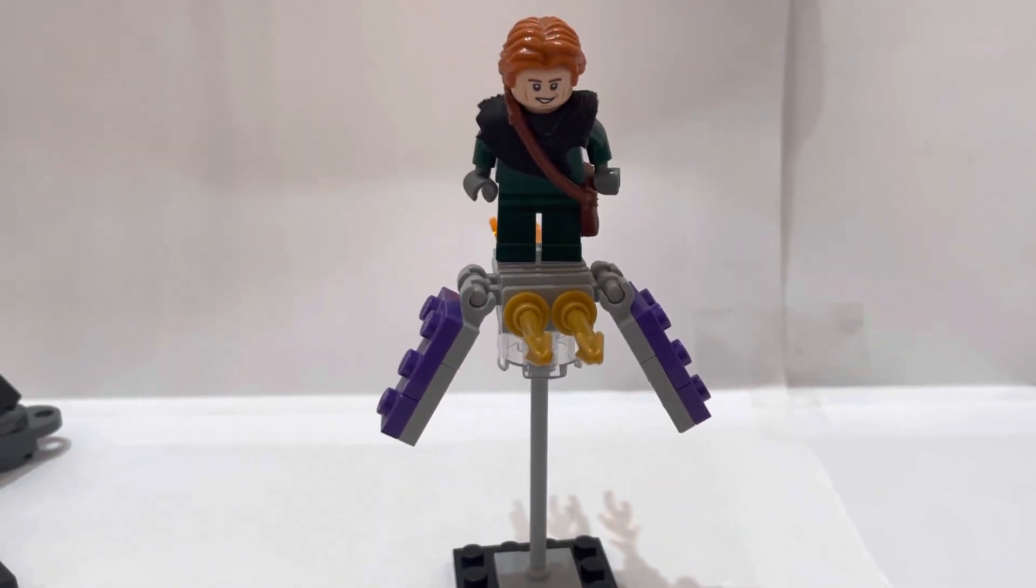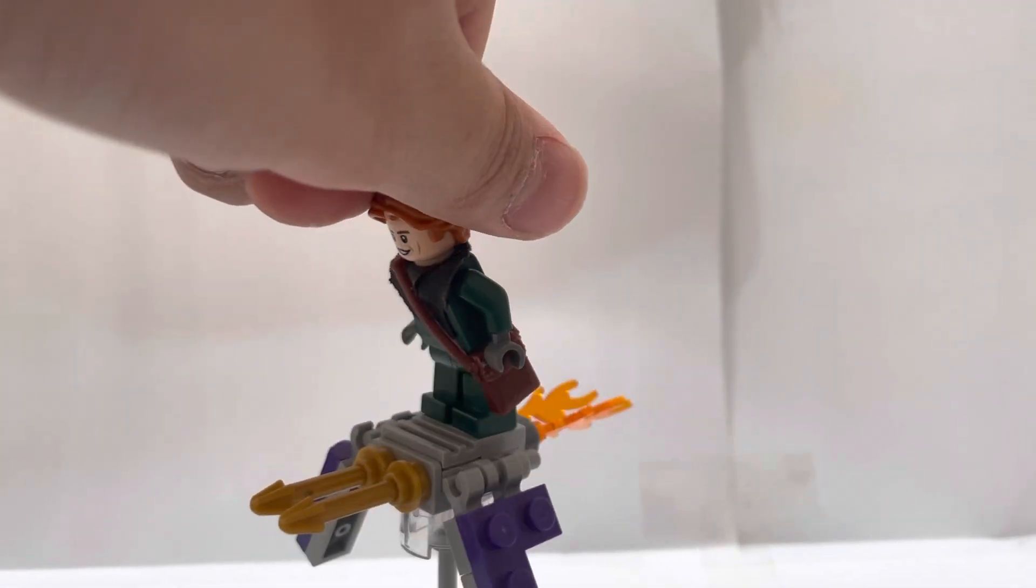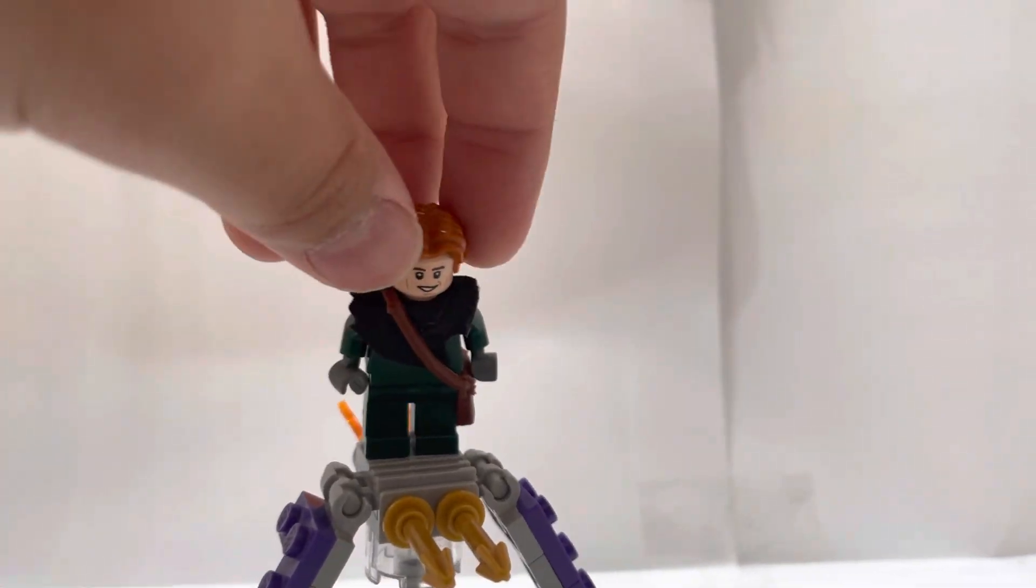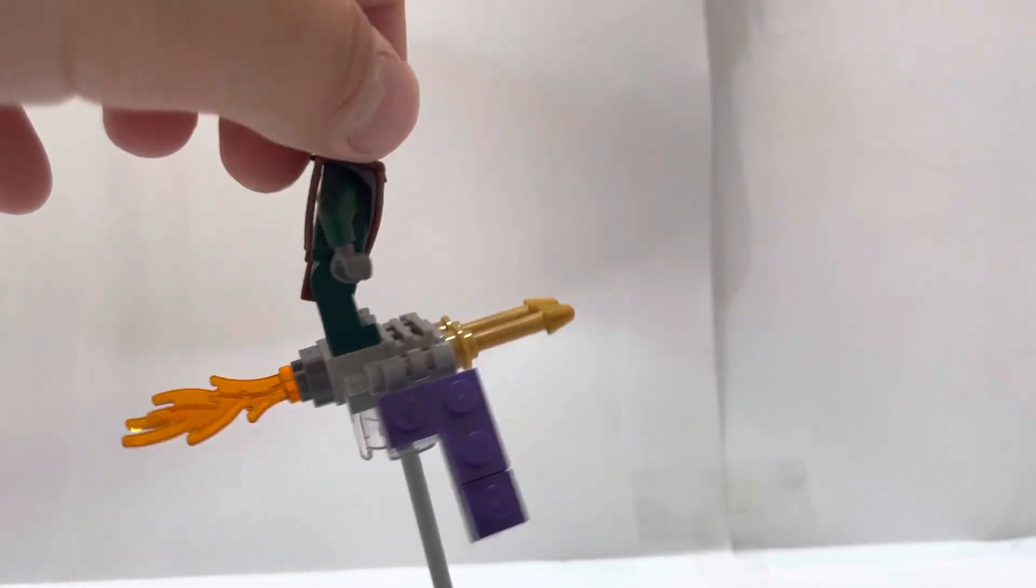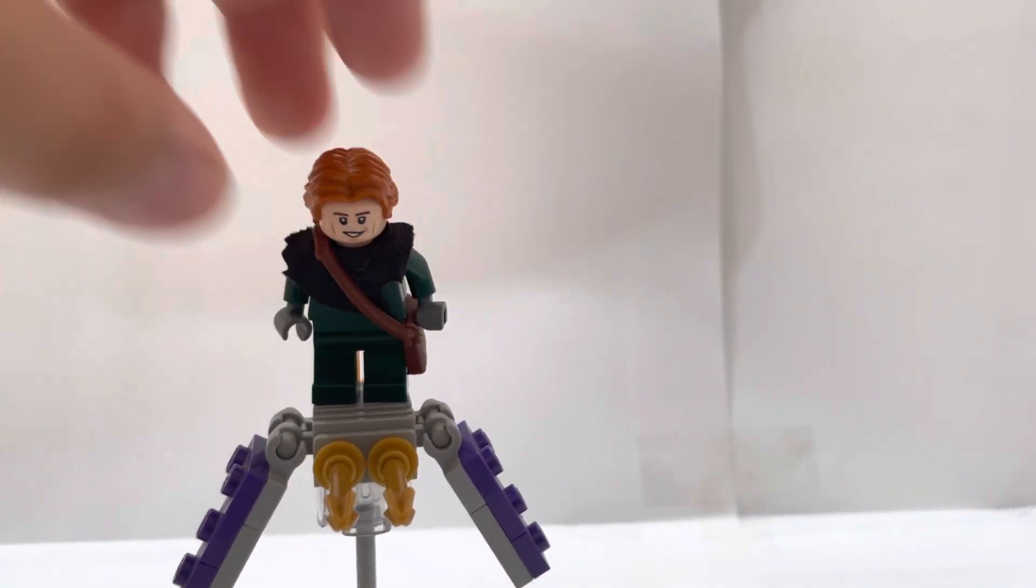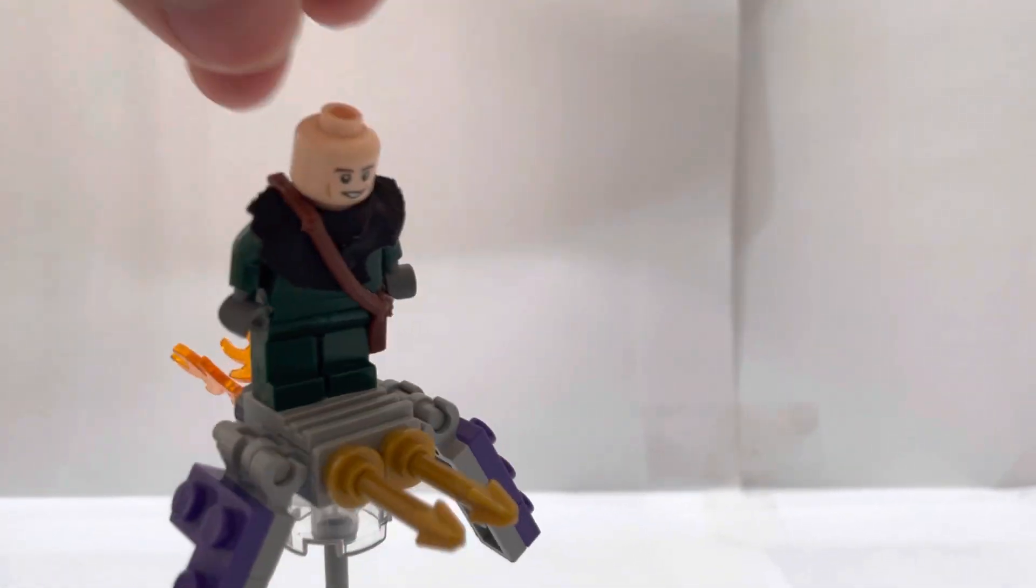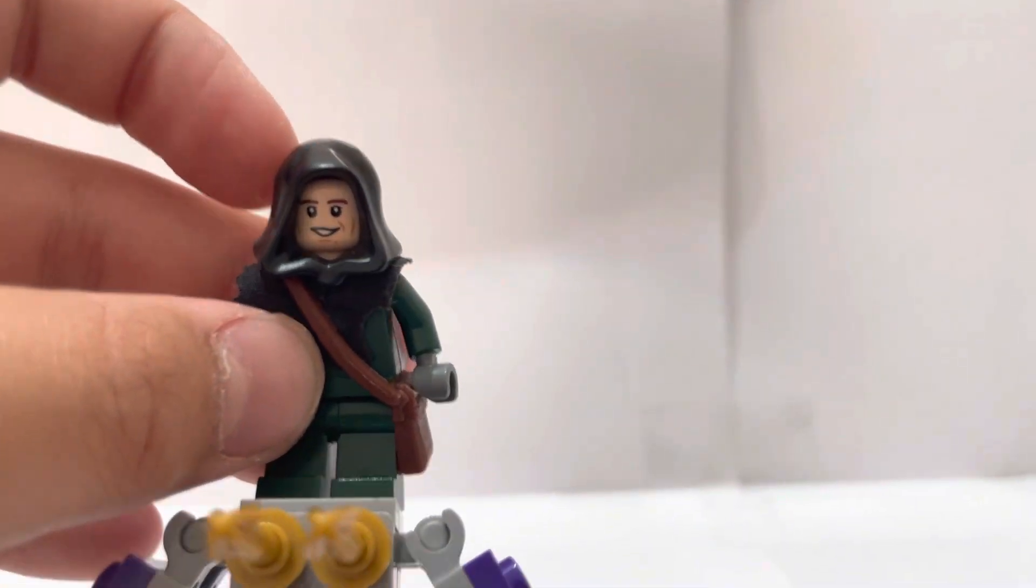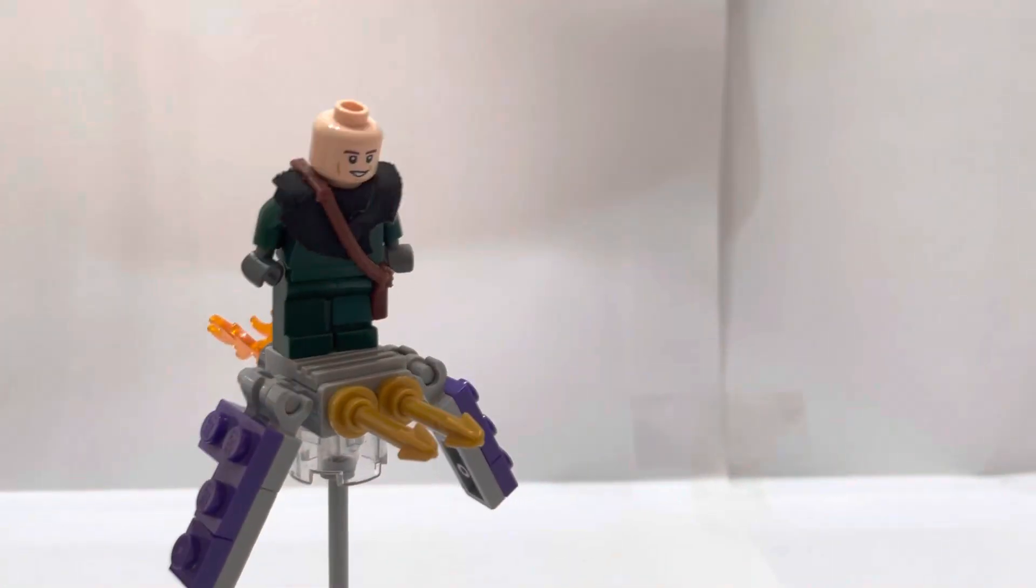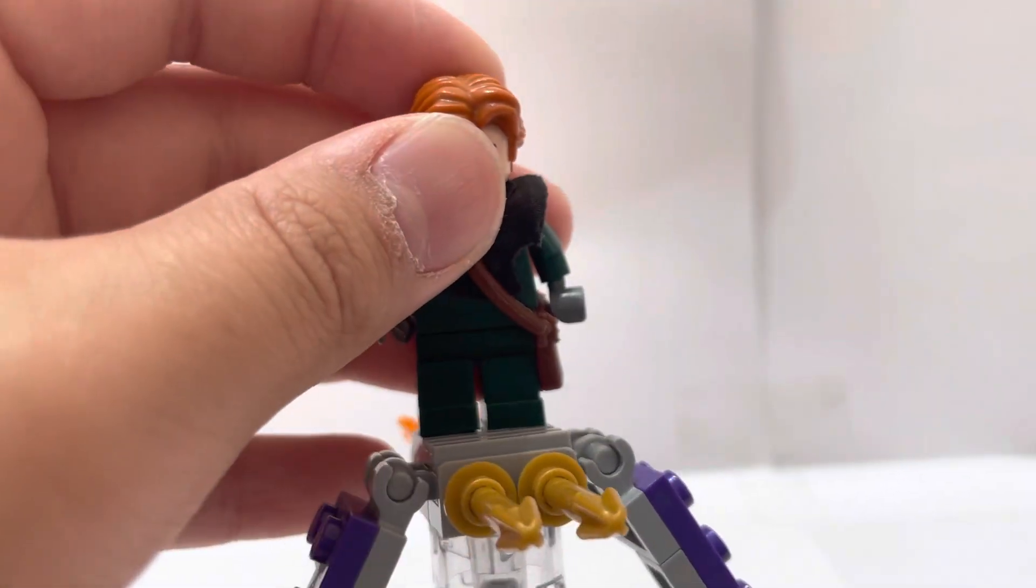Here we have the Green Goblin from No Way Home. He's got the satchel, the spikes, and he's on this pedestal to make it look like he's flying. I've also got a hood for him. If we take off the hair and put the hood on, you can see it's him with his hood. This uses Han Solo's head piece and Ronald Weasley's hair piece.